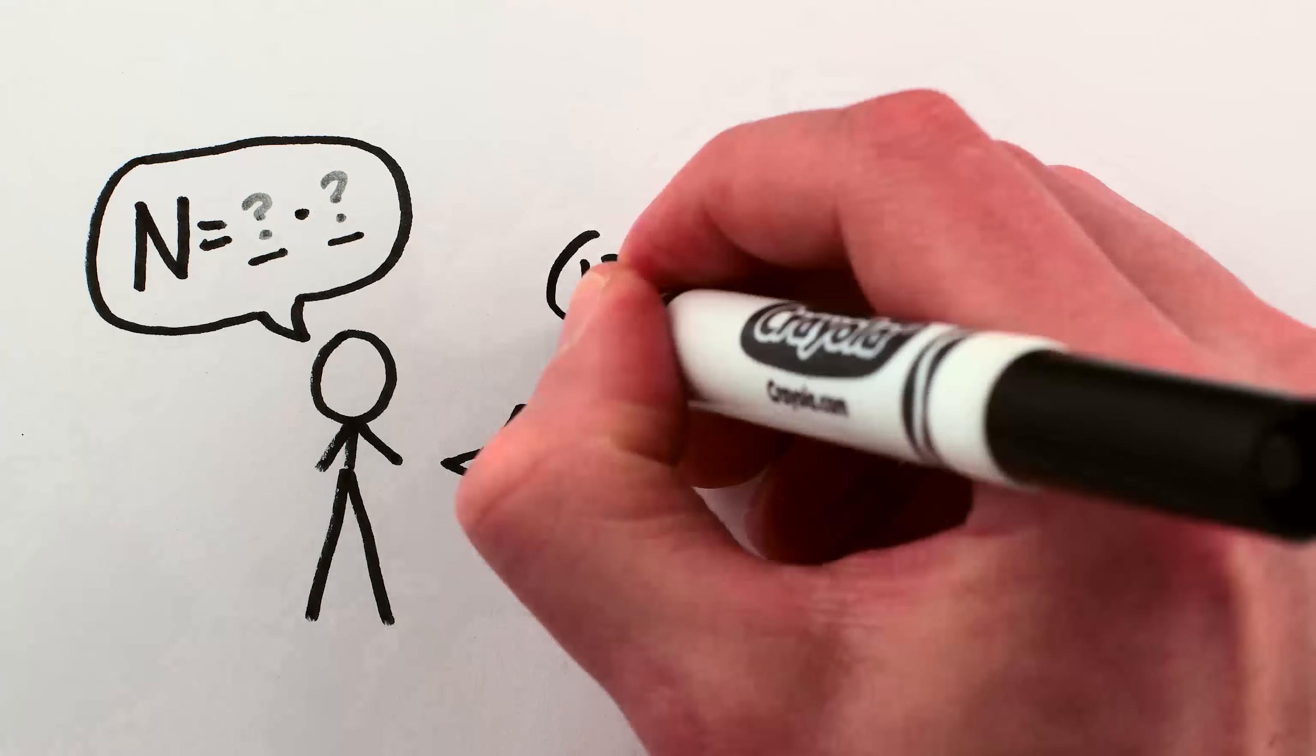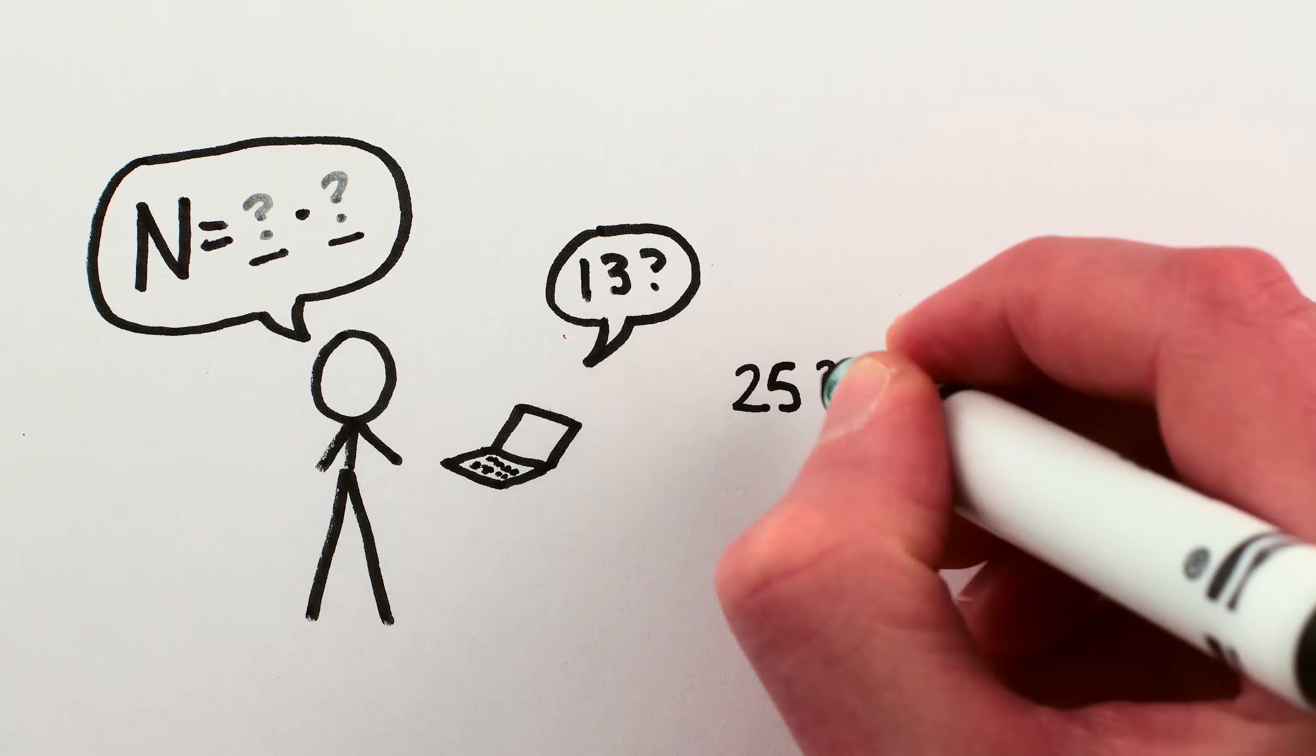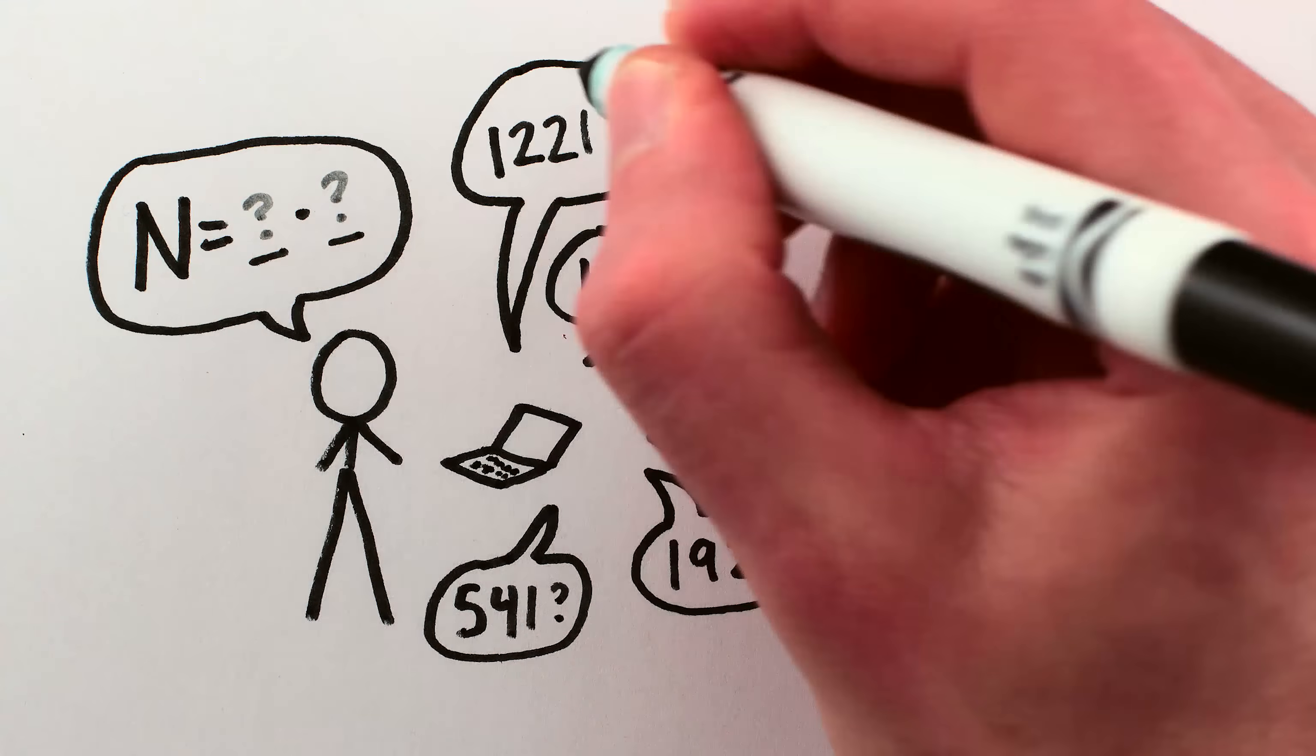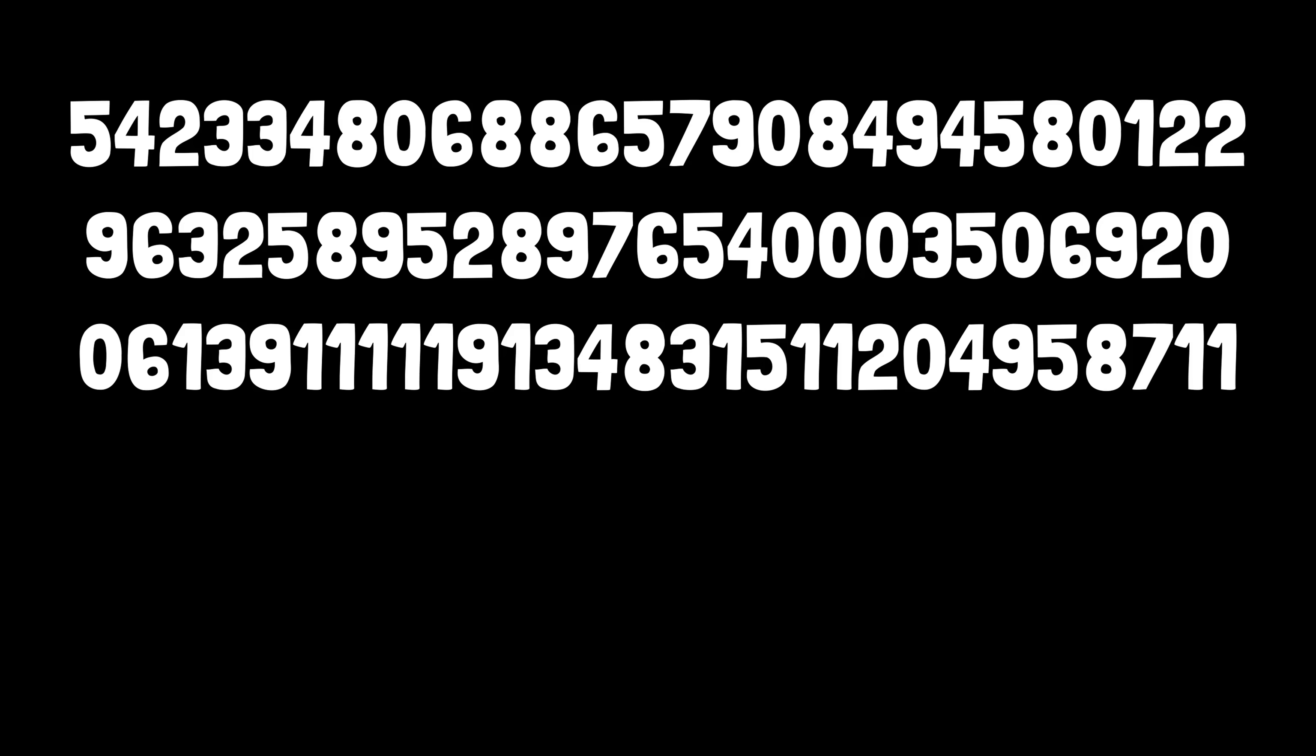Our current best methods essentially just guess a number that might be a factor, and check if it is. And if it isn't, you try again. And again. And again. It's slow. There are just so many numbers to check that even the fast, clever ways to make really good guesses are slow.